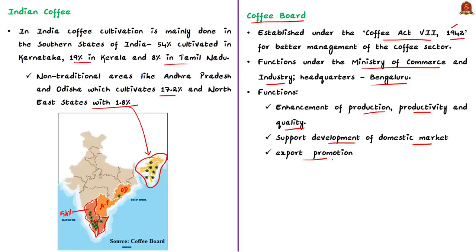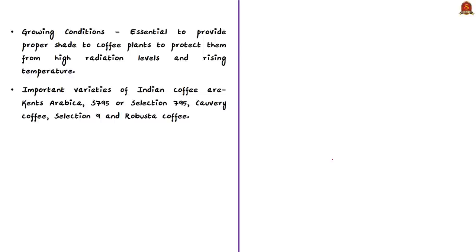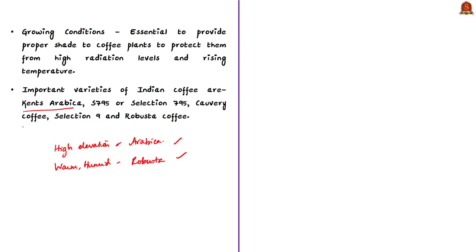The core activities of the Coffee Board include enhancing production, productivity, and quality of coffee, supporting domestic market development, and promoting exports for higher value returns. Regarding growing conditions, coffee plants need proper shade or cover to protect them from high radiation levels and rising temperatures. High-elevation regions are best suited for Arabica coffee, which is of mild quality, while warm, humid regions are best suited for Robusta coffee. Important varieties include Kent's Arabica, Robusta, Selection 795, Cauvery coffee, and Selection 9 — all differing in flavor, quality, and tolerance to leaf rust.